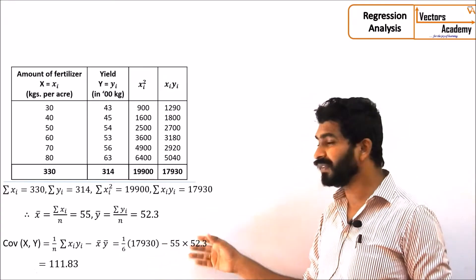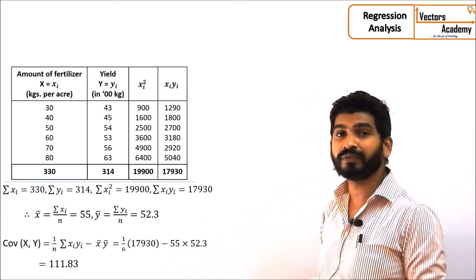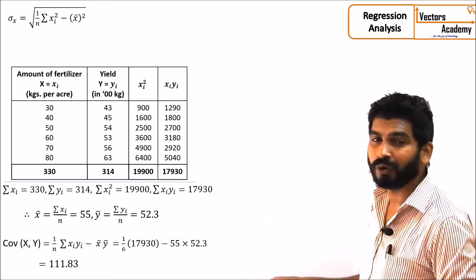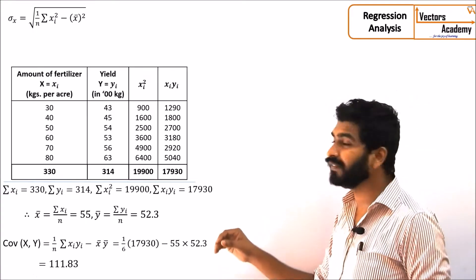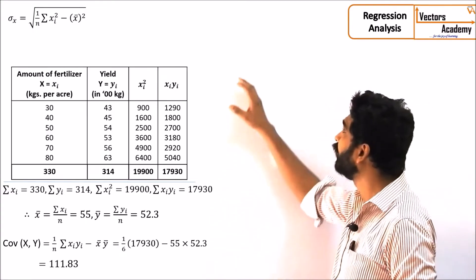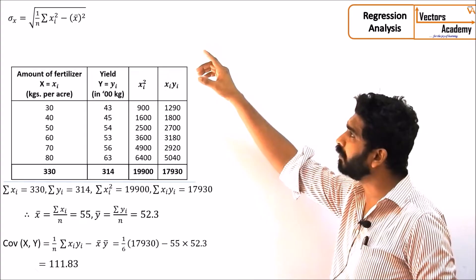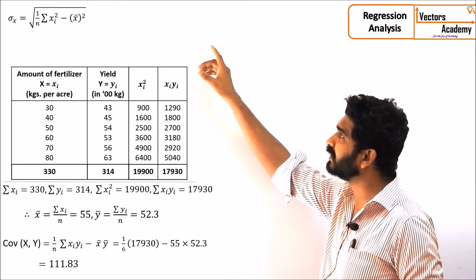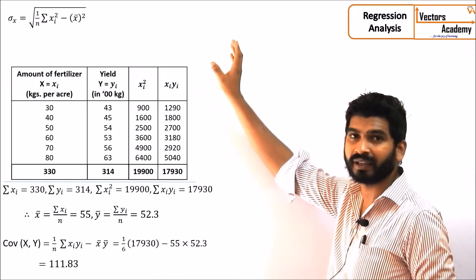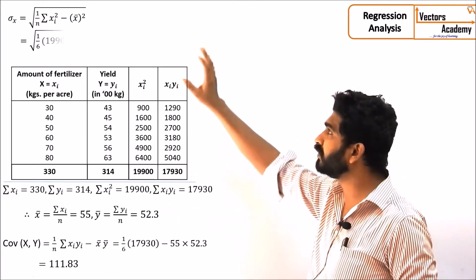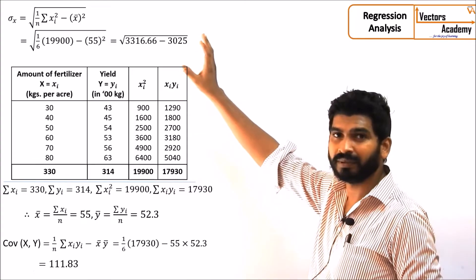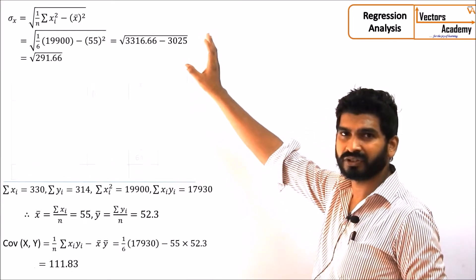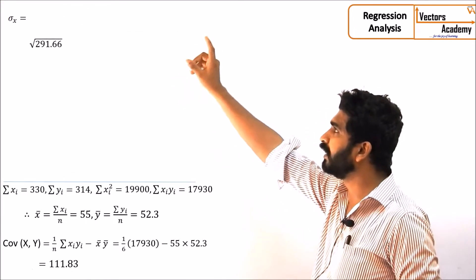Once we have the covariance, we need to find out the standard deviation of x. The formula for the standard deviation is the square root of (1/n) × summation of (x minus x̄) squared. We substitute the values from the table and we will get the standard deviation of x.